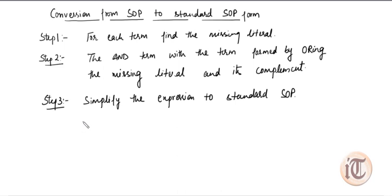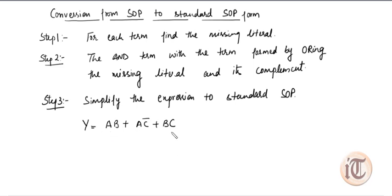We will take one example and see how we convert SOP into standard SOP step by step. Suppose we have the expression y = AB + AC̄ + BC. First we check whether this is in standard SOP form — it is not, because the total literals used are A, B, C (three literals), but in each term one literal is missing.